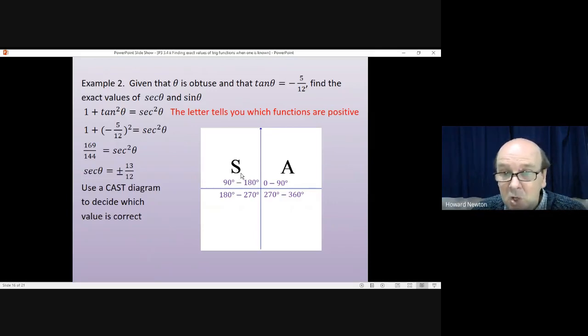Now, cosec theta is 1 divided by sine theta. So, it works in the same way. So, sine is positive. And so is cosec theta, because it's just 1 divided by sine. So, we've only got the letter S there. But you do need to remember, sine is positive. So is cosec, because it's 1 divided by sine.